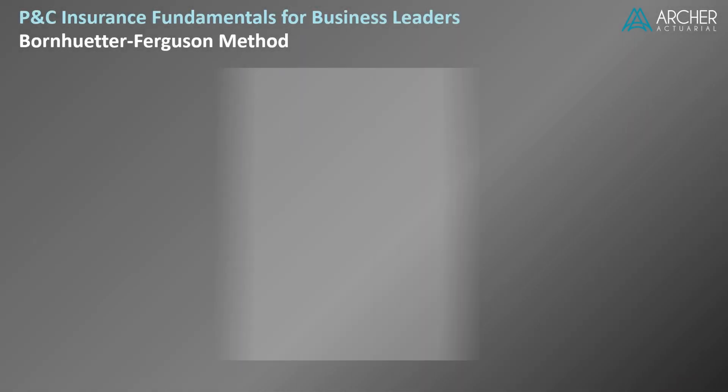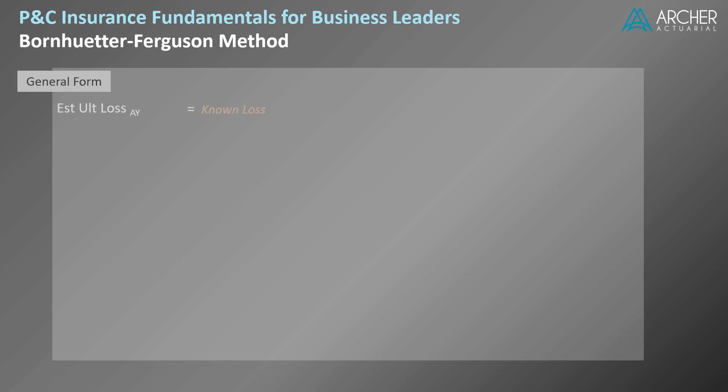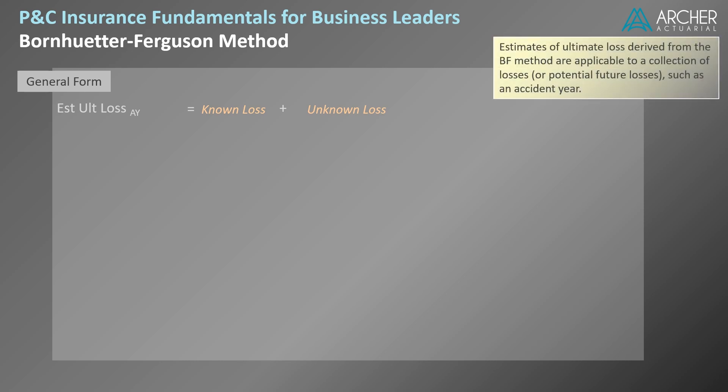Let's start our discussion of the BF method by presenting it in its most general form. In this formula, the estimate for ultimate loss via the BF method is equal to known loss plus unknown loss. One thing you should understand before we delve into this formula is that estimates of ultimate loss derived from the BF method are applicable to a collection of losses or potential future losses, such as an accident year.